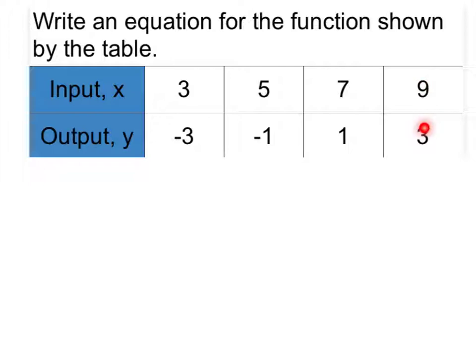The way I get from 9 to 3, I could either divide by 3 or subtract by 6. The way I get from 7 to 1, I can pretty much only subtract by 6, so that's going to be my solution.